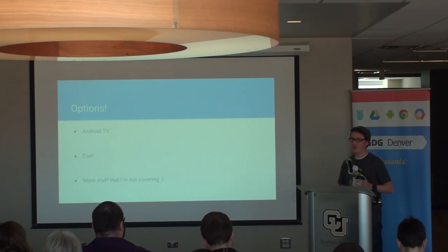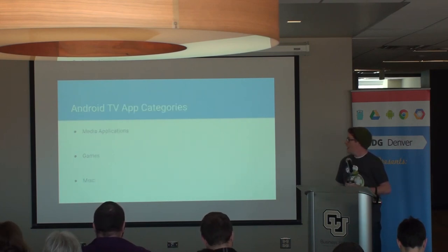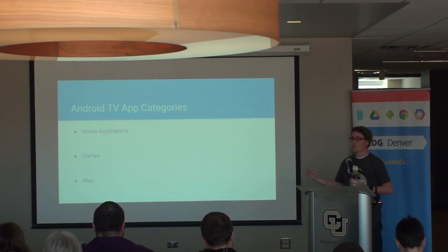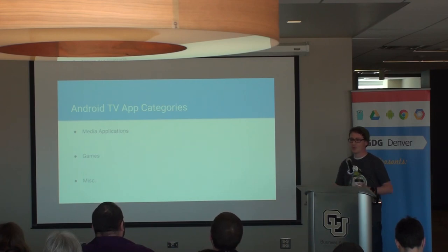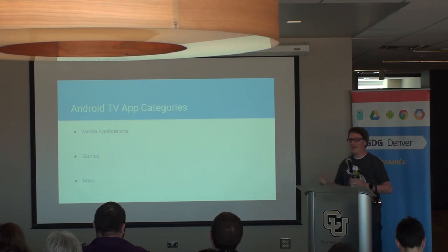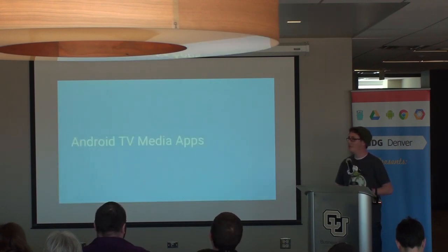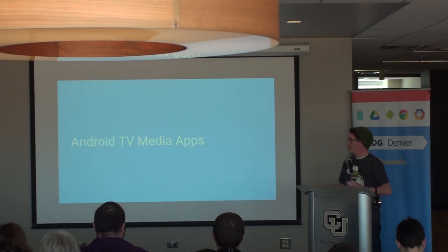There are a lot of options out there to get content onto the television. With Android TV, your apps generally fall into three broad categories: media apps, which is pretty much the majority of apps for the television; games; and miscellaneous, which would be file browsers, torrent clients, and whatever else.